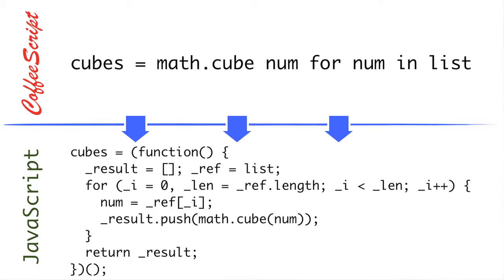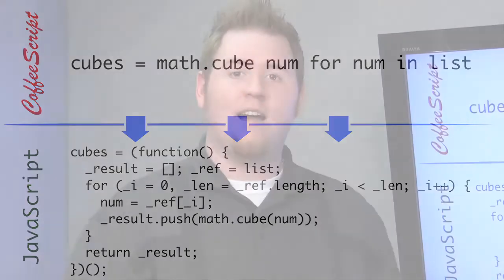Now, one of the most powerful things that it gives us is list comprehensions, which are a feature in a lot of different scripting languages, but not native in JavaScript. And what list comprehensions allow us to do is iterate over a list, mutate that list somehow, and get a new list back from it.